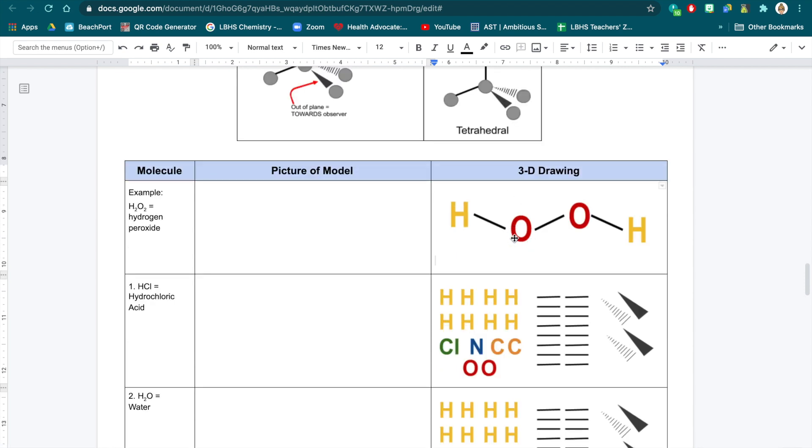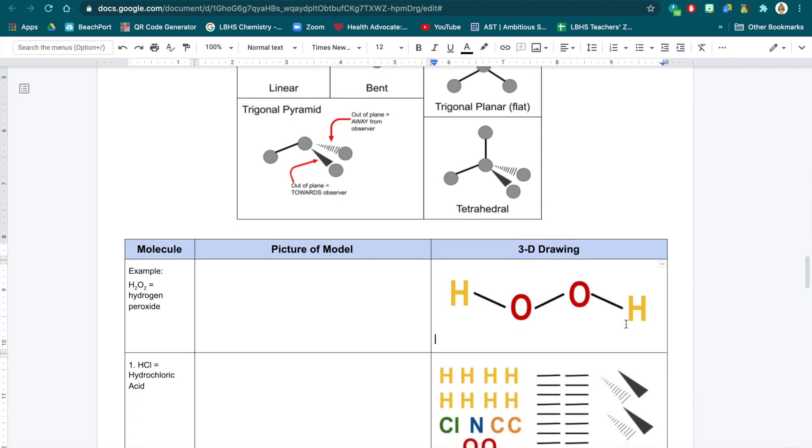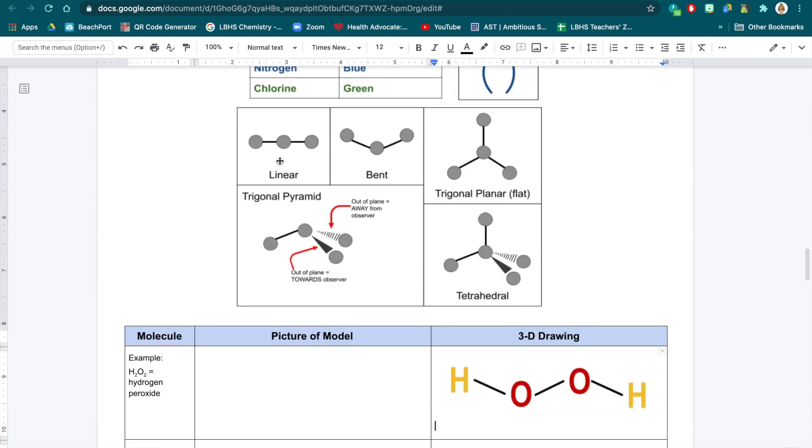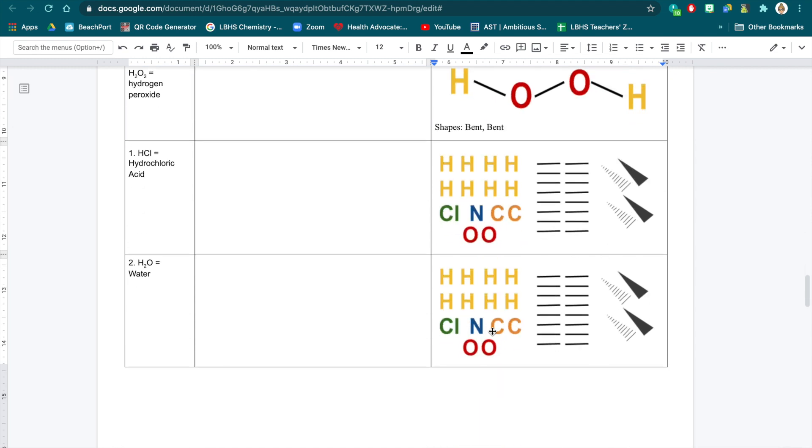You can only name geometry when there is a central atom with two or more bonds. For instance, this oxygen has a bent shape. You can see it's the same as this. And this oxygen also has a bent shape. You're only going to do the shapes of the central atoms, not the side ones. We're not going to call H and O linear. There needs to be, like in this drawing, at least 3 atoms to have a shape. You'll just put that down below. You'll do that for each of your molecules.